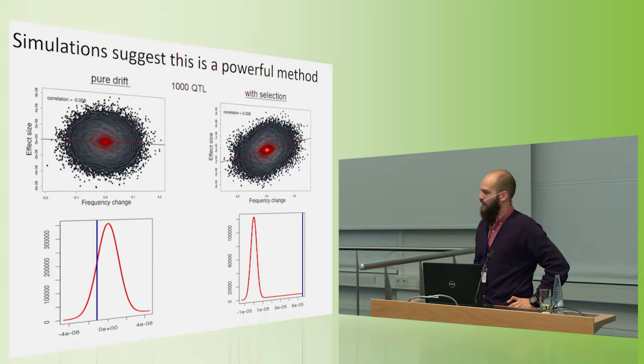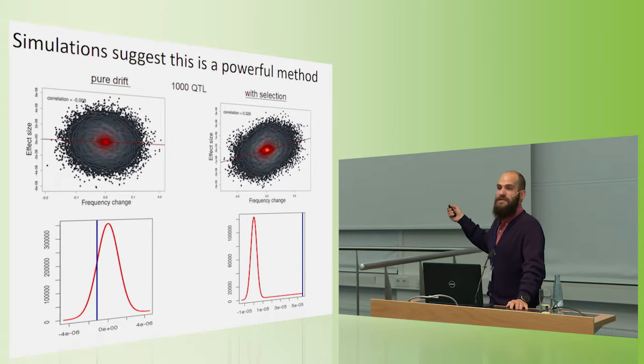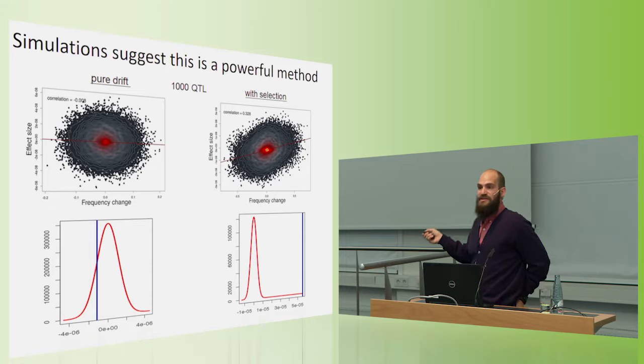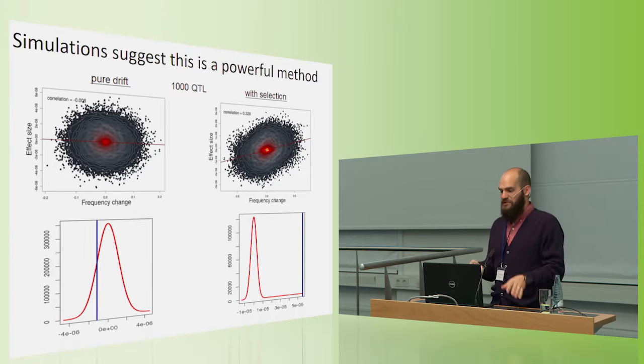So now I want to spend a few slides demonstrating that this method is probably quite powerful and hopefully showing some of the future applications. So when we do simulations, assuming 1,000 QTL are controlling a trait, so a relatively polygenic trait, we get no evidence of selection when we simulate pure drift and we shouldn't. And then we have strong evidence of selection when we simulate that there's been selection. So that looks good so far.